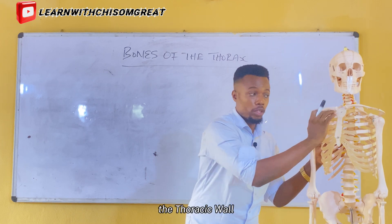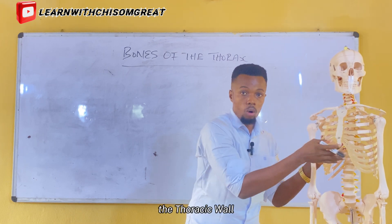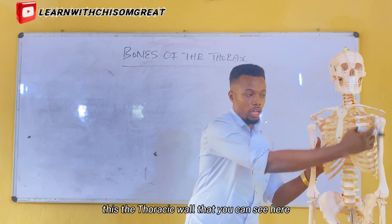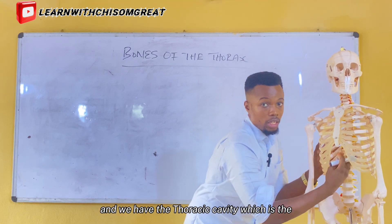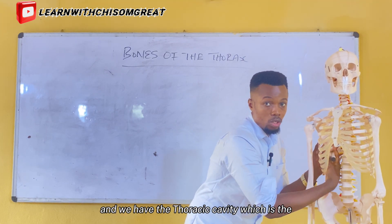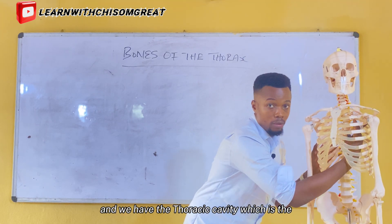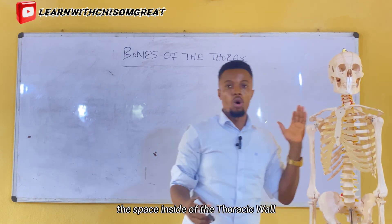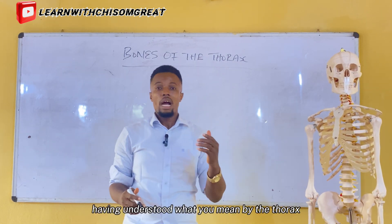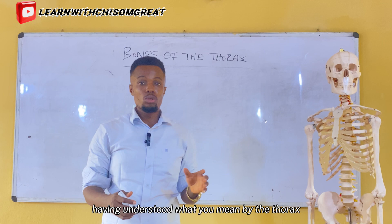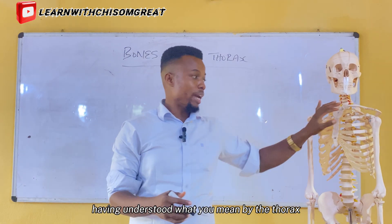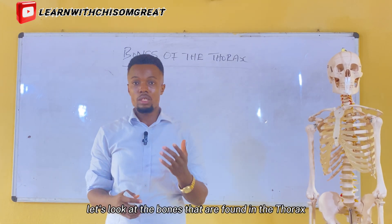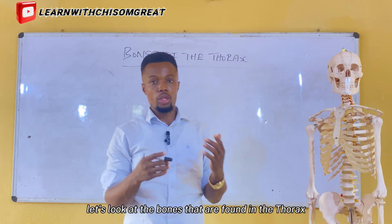In the thorax, we have the thoracic wall. This is the thoracic wall that you can see here. And we have the thoracic cavity, which is the space inside of the thoracic wall. Having understood what we mean by the thorax, let's look at the bones that are found in the thorax.